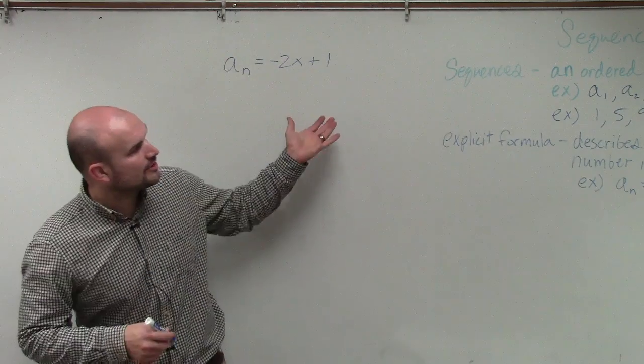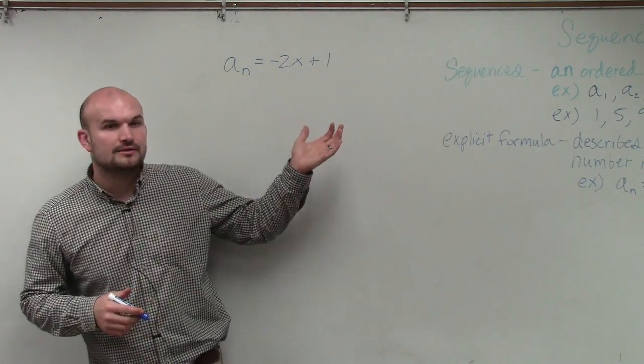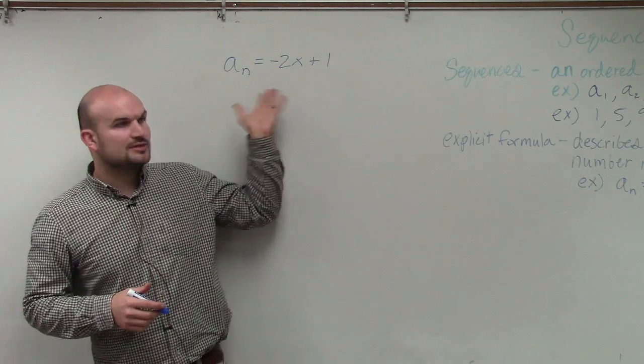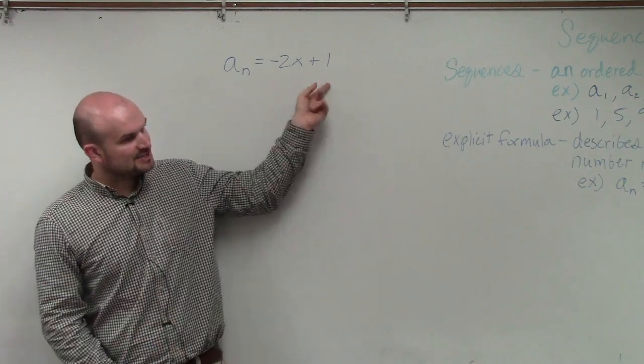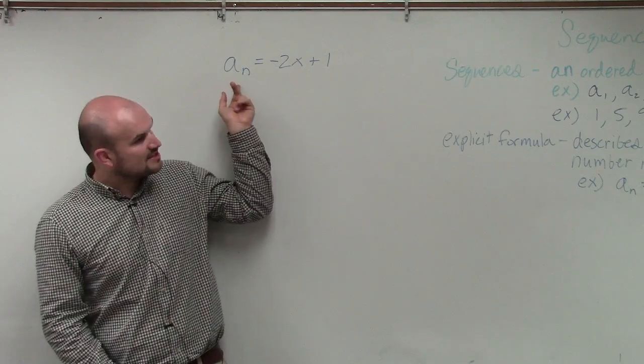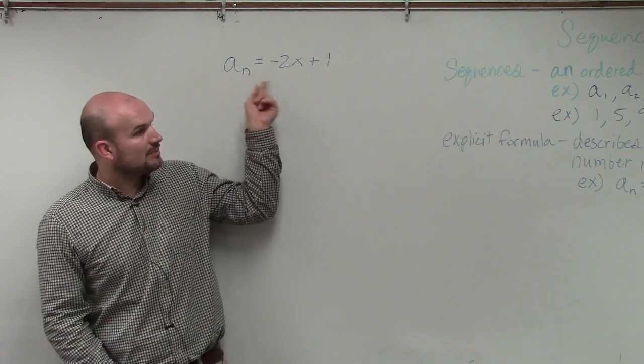So basically what we're looking at is finding the first five terms of the sequence. You can see here we have this explicit formula which represents the nth term of the sequence.